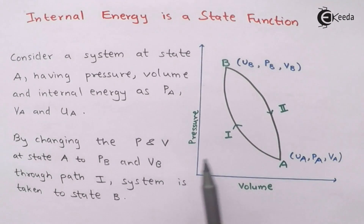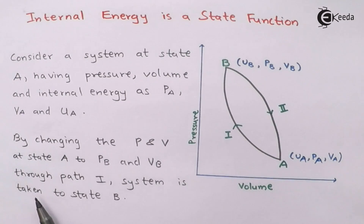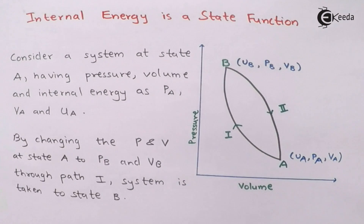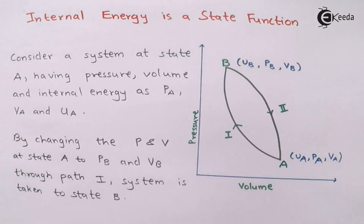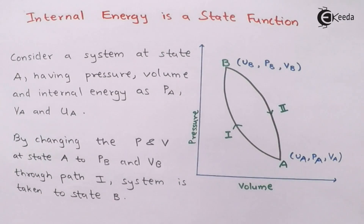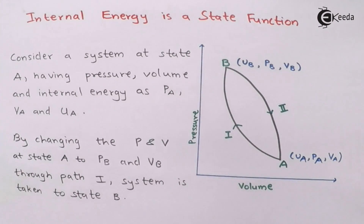This change is done through Path 1. The system is taken from State A to State B via Path 1, where the pressure has changed to P_B and the volume has changed to V_B. This is the first change observed, performed through Path 1.